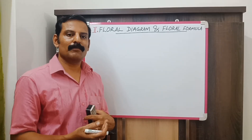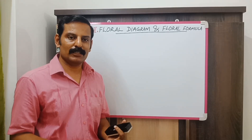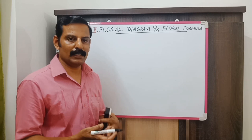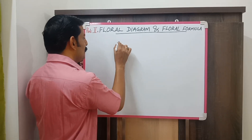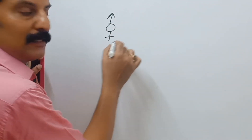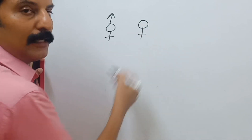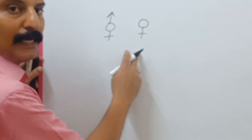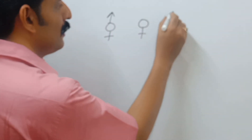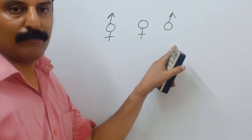Whether it is a bisexual flower or a unisexual flower, these things can be represented with specific symbols. If it is bisexual, it is represented like this. If it is a female flower, you represent it like this. If it is a male flower, you represent it like this.